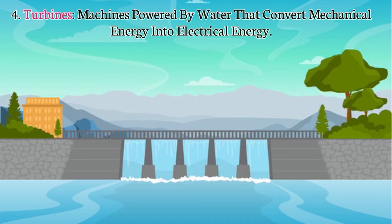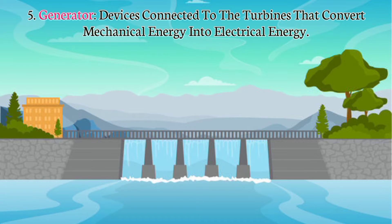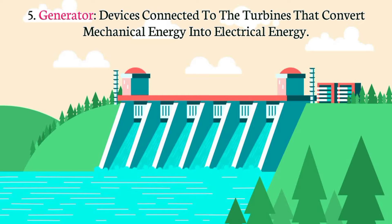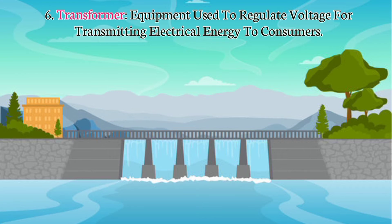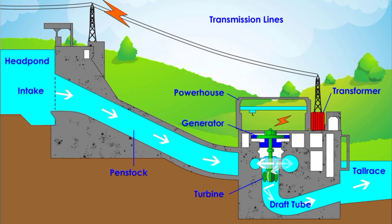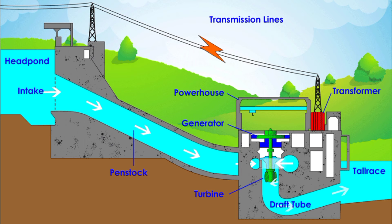Number 4: Turbine — machines powered by water that convert energy to drive the generator. Number 5: Generator — devices connected to the turbine that convert mechanical energy into electrical energy. Number 6: Transformer — equipment used to regulate voltage for transmitting electrical energy to consumers. Number 7: Transmission Line — high voltage lines used to transmit electrical energy to consumers.